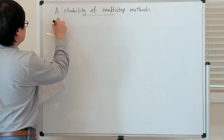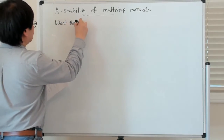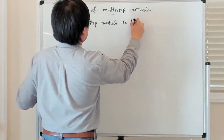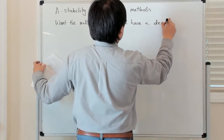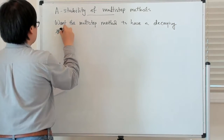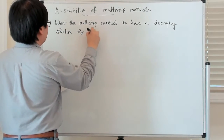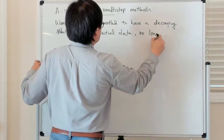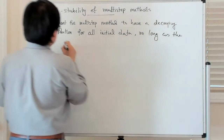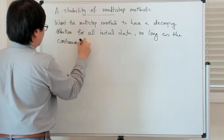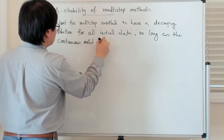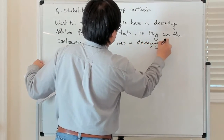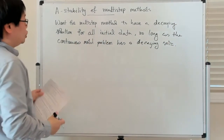So the remark is that we want the multi-step method to have a decaying solution for all initial data, so long as the continuous model problem has a decaying solution. That's basically our notion of stability.